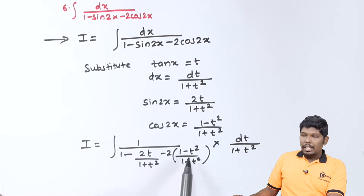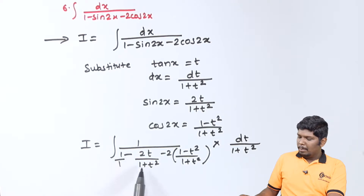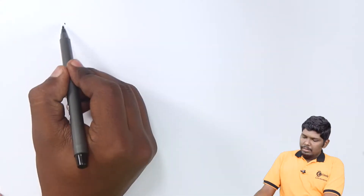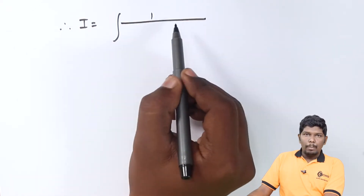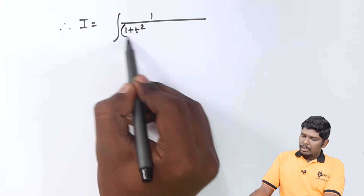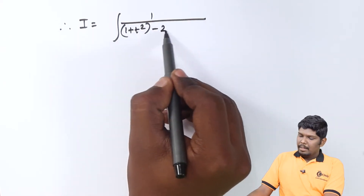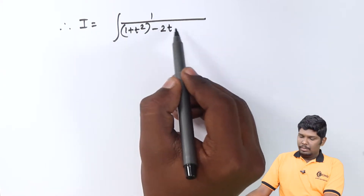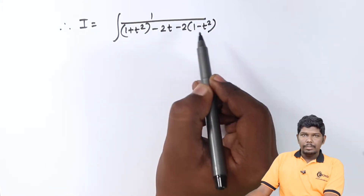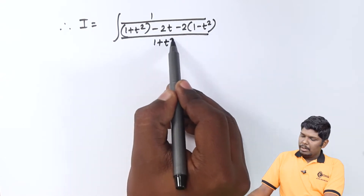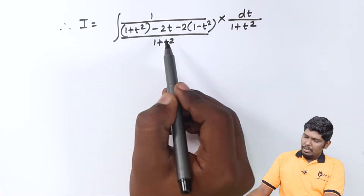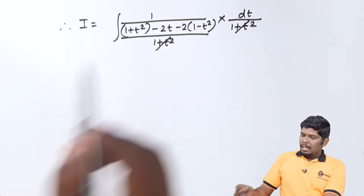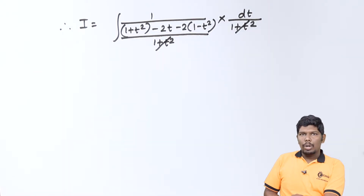Now let us solve these three fractions by considering (1 + t²) as their LCM, so that 1 will be multiplied with (1 + t²). Therefore I will be the integral of (1 + t²) upon [(1 + t²) minus 2t minus 2·(1 − t²)] divided by (1 + t²), so that (1 + t²) will be cancelled.